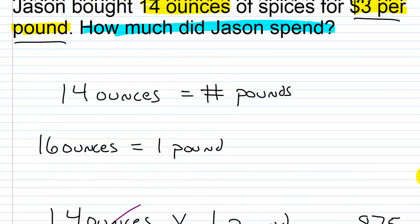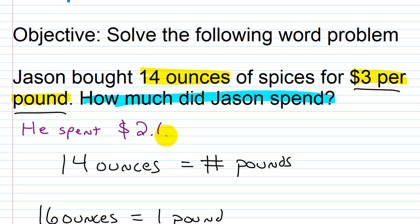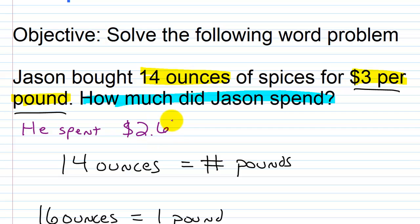We end up with 2.625. In terms of the problem, how much did Jason spend? We have $2.625, but you can't have half a cent. So we round it up and say $2.63. It's not exactly 2.63, but it's very close, so we use that answer.